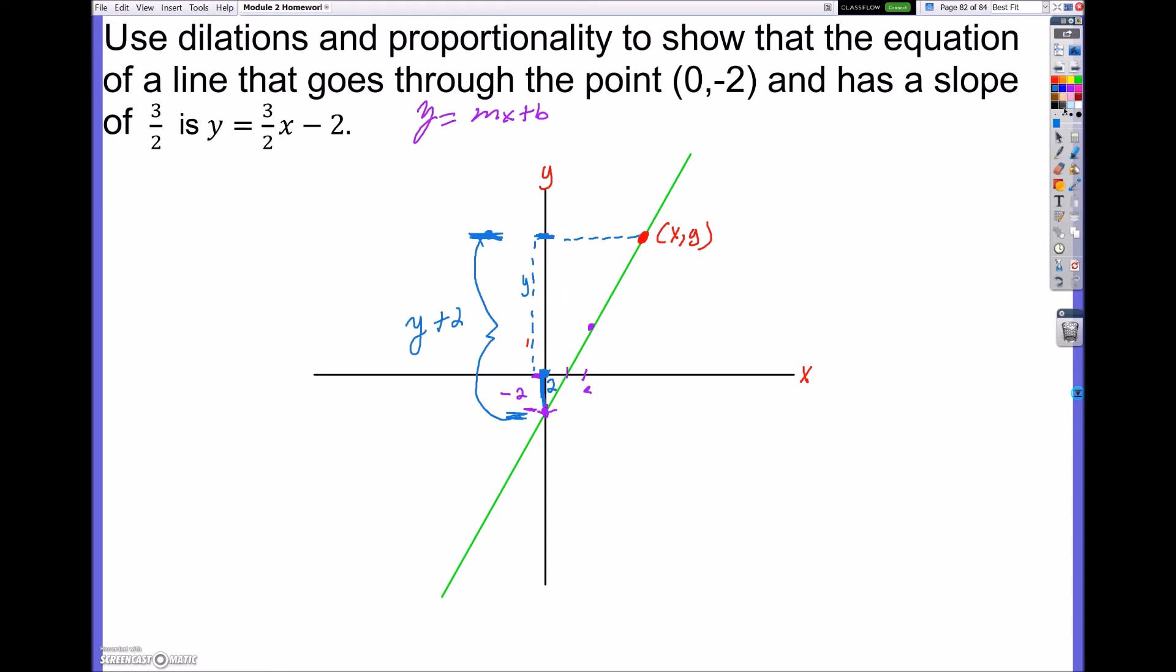Now, I know that the distance from, let's go ahead and use another point, the distance from here over is just x. Okay? Because I didn't go over at all. So now what I need to be able to do is write my proportion of my rise over run. Now, remember, my original slope it gave us was 3 over 2.